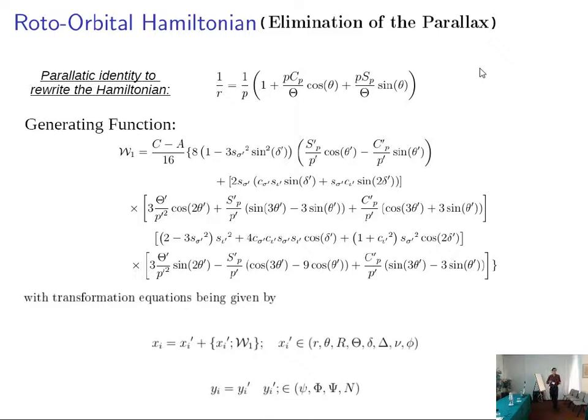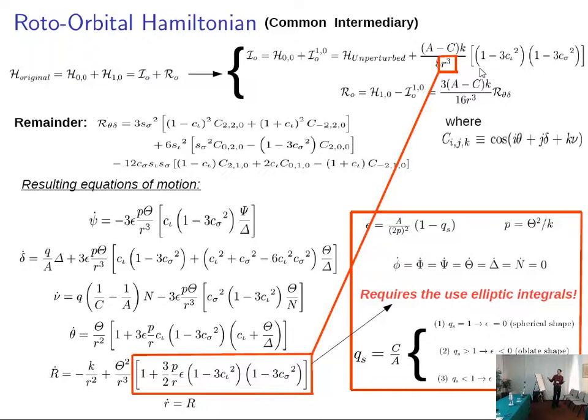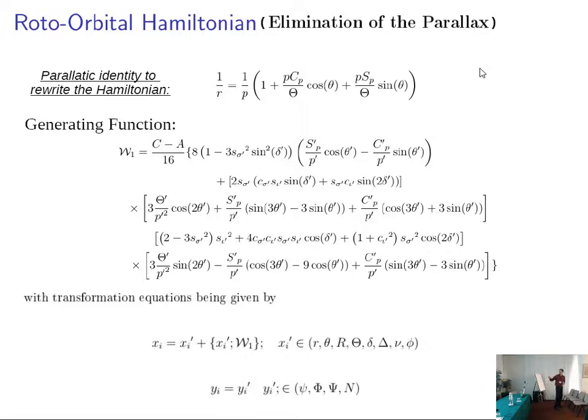But we can also build another Hamiltonian applying the very well known, the classically known canonical transformation that is the elimination of the parallax. And the elimination of the parallax is the main concept that we need to understand. We are taking one of these R Q here, splitting R squared and one over R. And we perform this substitution here. And we apply a canonical transformation in terms of Lie series.